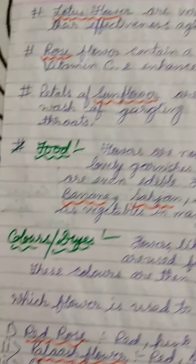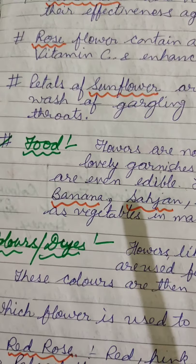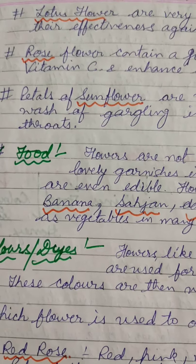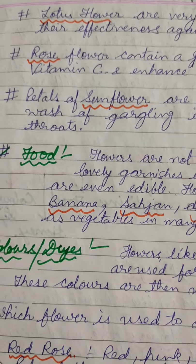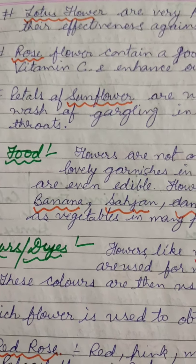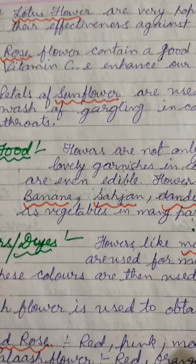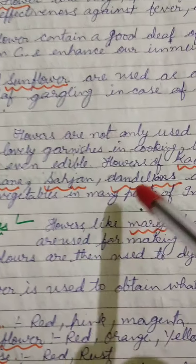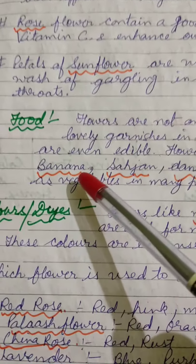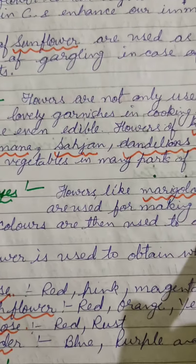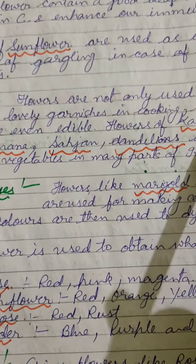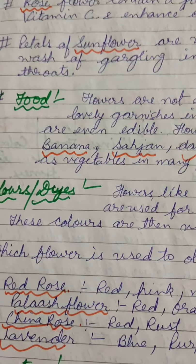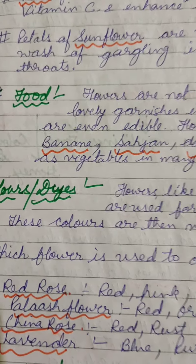The next use of flowers is as food. Various flowers are used as vegetables, and they are not only used for garnishing food but are also edible. Flowers like kachinar, banana flower, sahajan, and dandelion are used as vegetables in many parts of India.